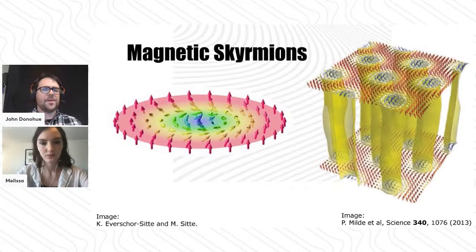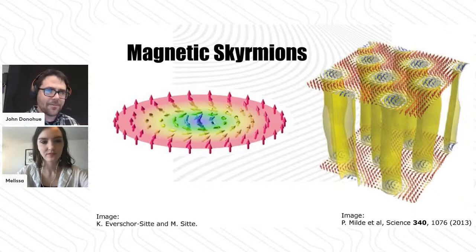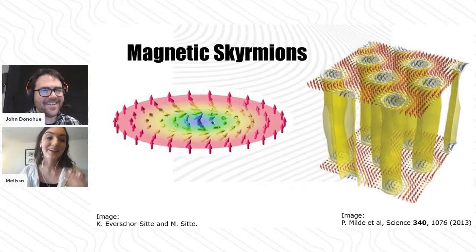These skyrmions - we should be thinking about these as directions of spins inside a material. They're not something we can... As you mentioned, they're nanometer scale in size. They're not something we can measure with a microscope. So what can we do to actually measure or infer the presence or absence of skyrmionic behavior?